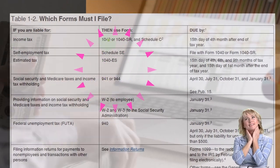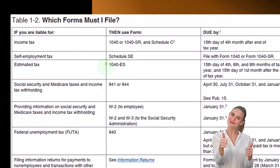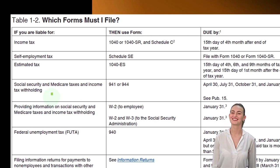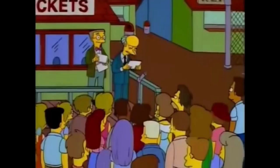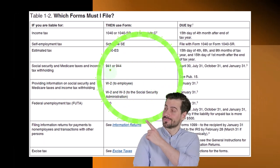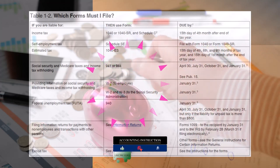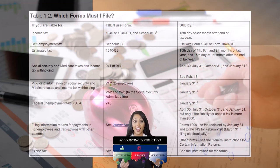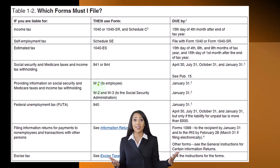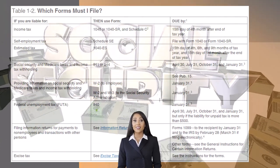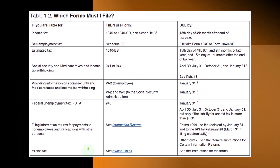Which forms must you file? If liable for income tax and self-employment tax, you file Form 1040 and Schedule SE. For estimated tax payments, file Form 1040-ES. For Social Security, Medicare taxes, and income tax withholding for employees, file Forms 941 or 944 and W-2s. If you're a Schedule C business with employees, you deal with their withholdings separately from your own SE tax on net income. Also file Form 940 for federal unemployment tax (FUTA), plus any applicable information returns and excise tax forms.